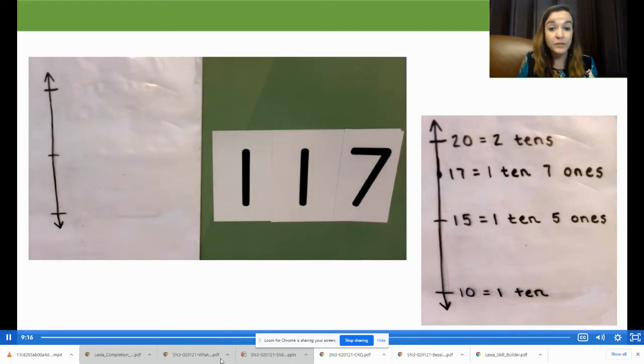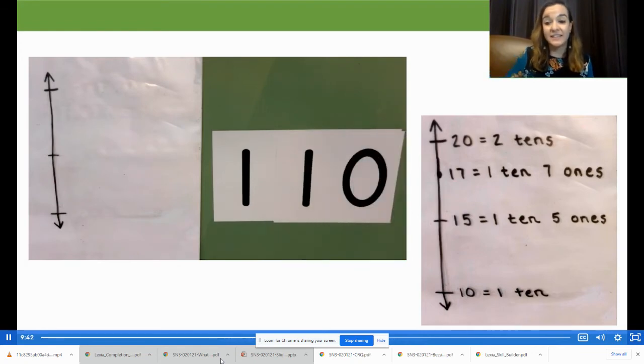Or maybe you thought back to our earlier problem of 17 milliliters and thought, well, 17 has one ten. So 117 would have 10 tens plus one ten. Or maybe you thought, well, 110 has 11 tens and then there's just seven ones. So 117 has 11 tens.